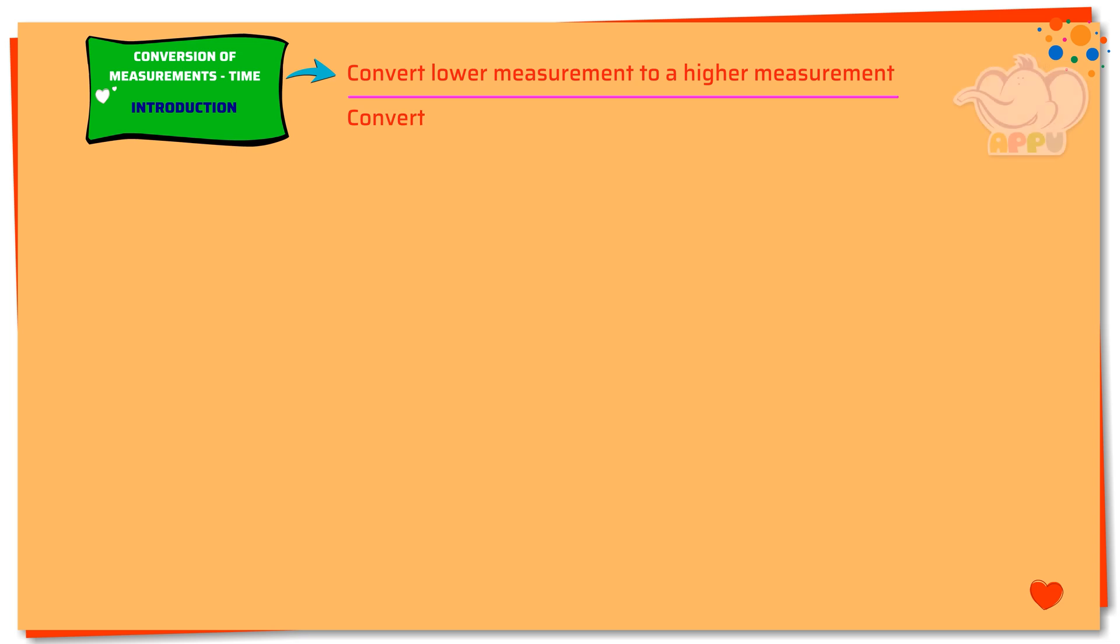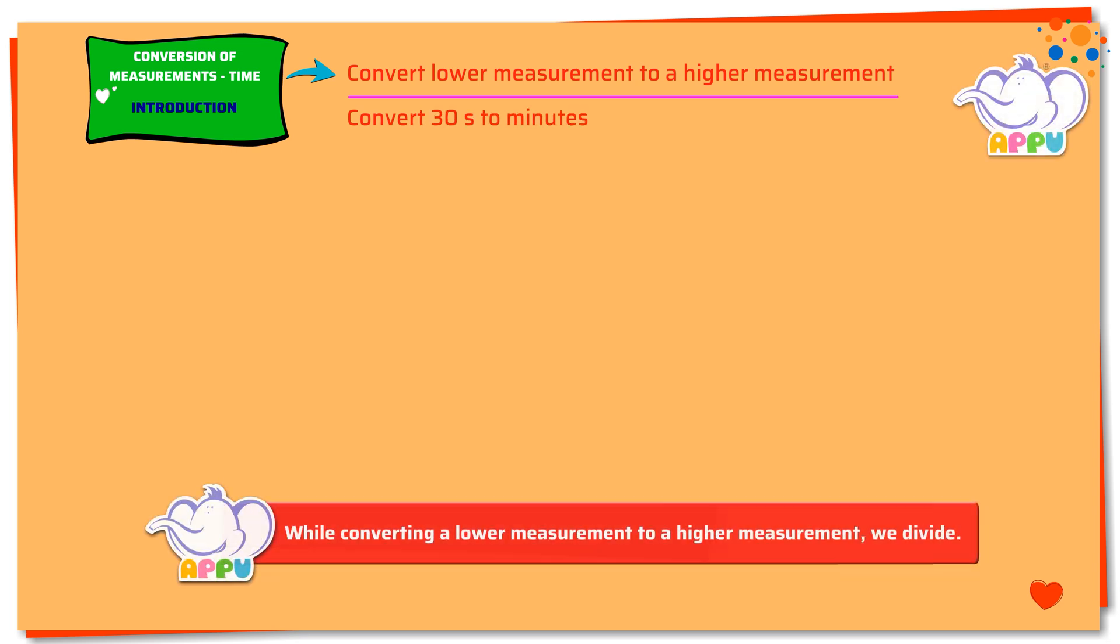Convert 30 seconds to minutes. Here we need to find how much is 30 seconds in minutes. We know that 60 seconds equals 1 minute.